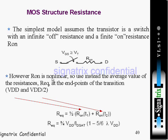However, R on is non-linear, so we use instead the average value of the resistance R equal at the end points of the transition. At different voltages VDD and VDD by 2, they're calculating the on resistance, then taking the average to get equivalent resistance. R equivalent equals 3 by 4 VDD by ID sat times 1 minus 5 by 6 lambda VDD. This is the equivalent resistance of the MOS at two different end points.